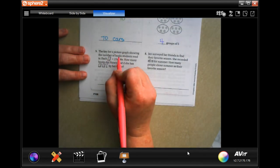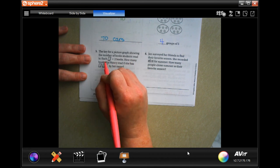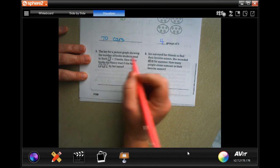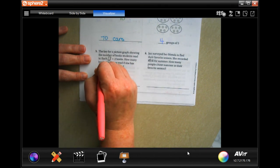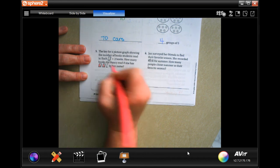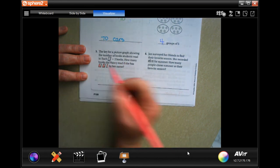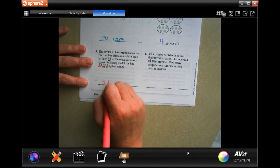The key for the picture graph is showing number of books students read. Each book is two books. How many books did Nancy read if she has two and a half books by her name? So there's two, two, two, and then there's a half a book which is only going to be one. So two, four, five, five books.